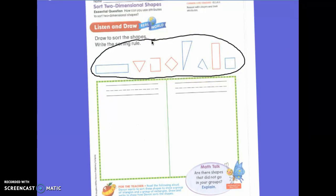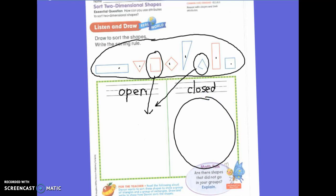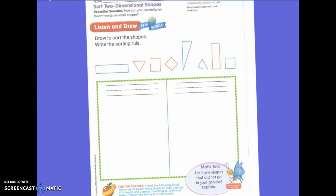But he could have sorted them in a different way. How else could Devin have sorted his shapes? Open shapes. Very good. He could have put open shapes over here. So this one would have gone down here. This one would have gone in here. What do we call it if it's not open? Closed. If it's not open, then the gate is closed. So all the rest of these would have gone in my closed box. We could have done an open and a closed group.